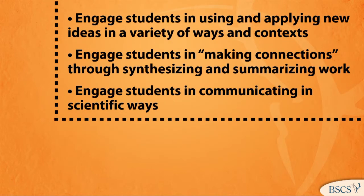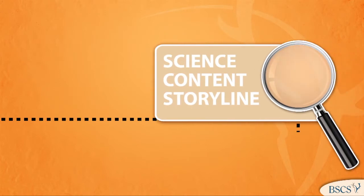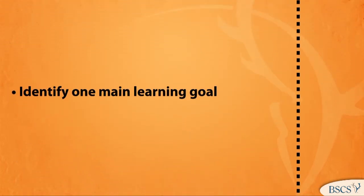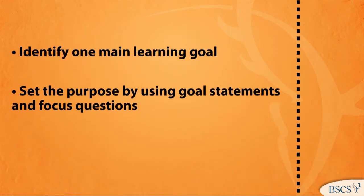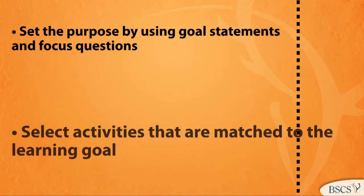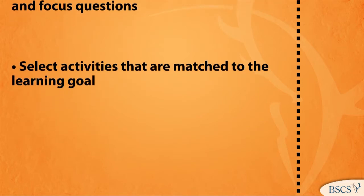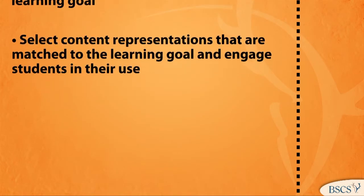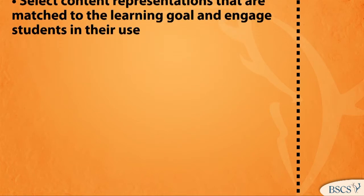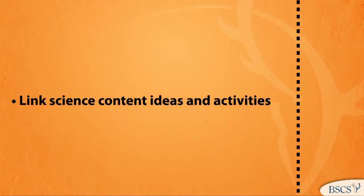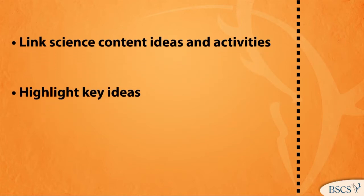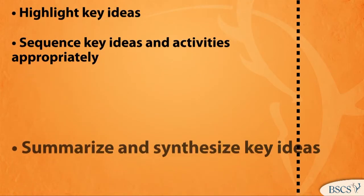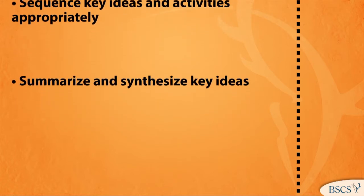The science content storyline lens is made up of nine teaching strategies: identify one main learning goal; set the purpose by using goal statements and focus questions; select activities that are matched to the learning goal; select content representations that are matched to the learning goal and engage students in their use; link content ideas and activities; highlight key ideas; sequence key ideas and activities appropriately; and summarize and synthesize key ideas.